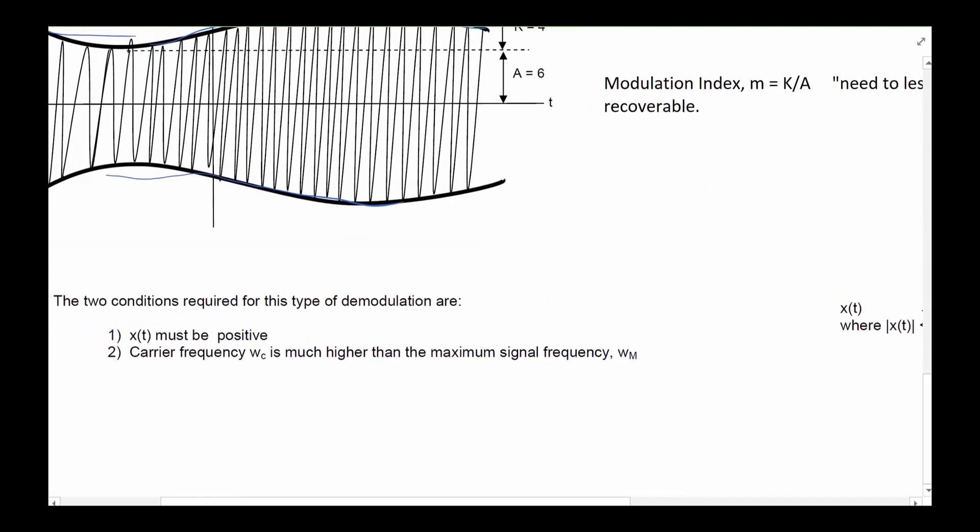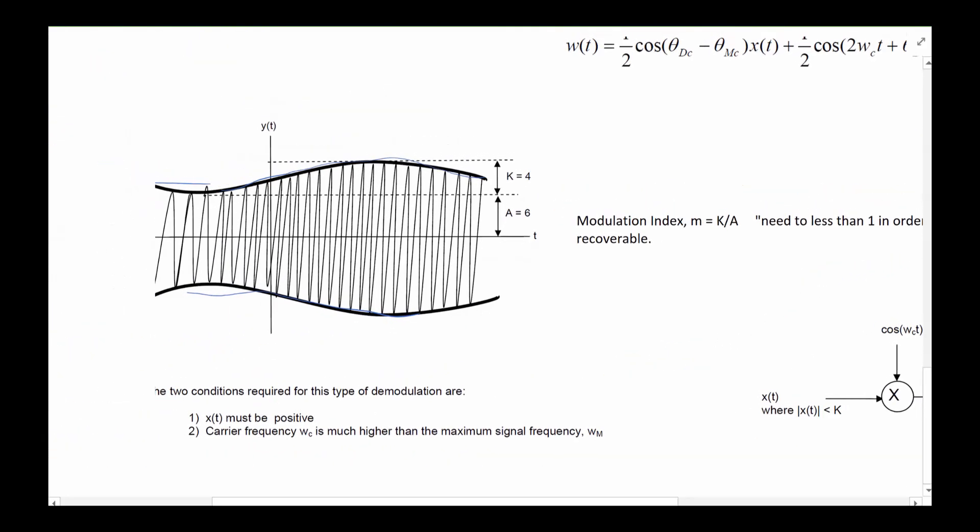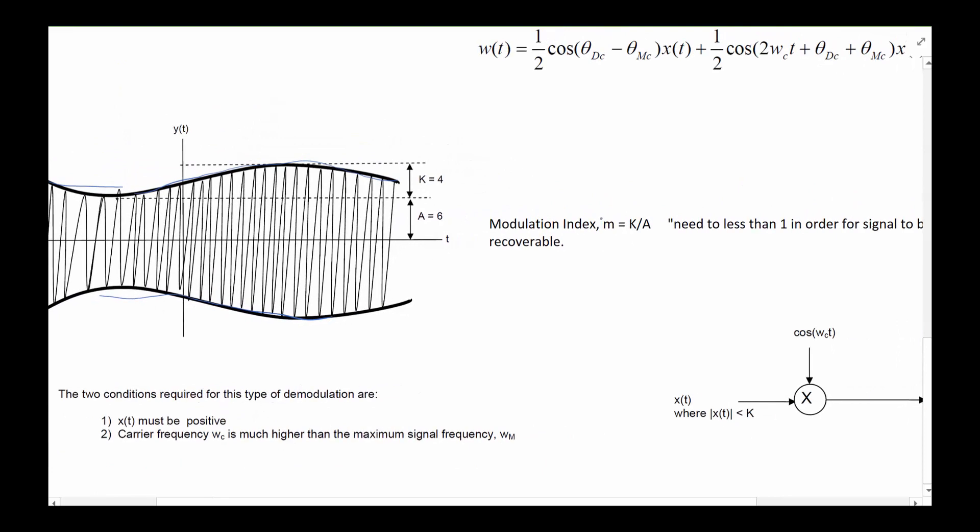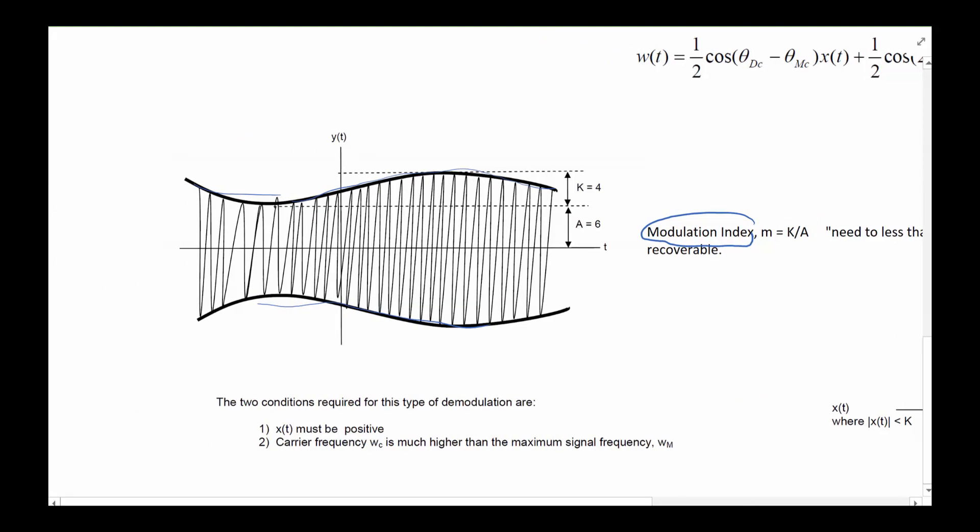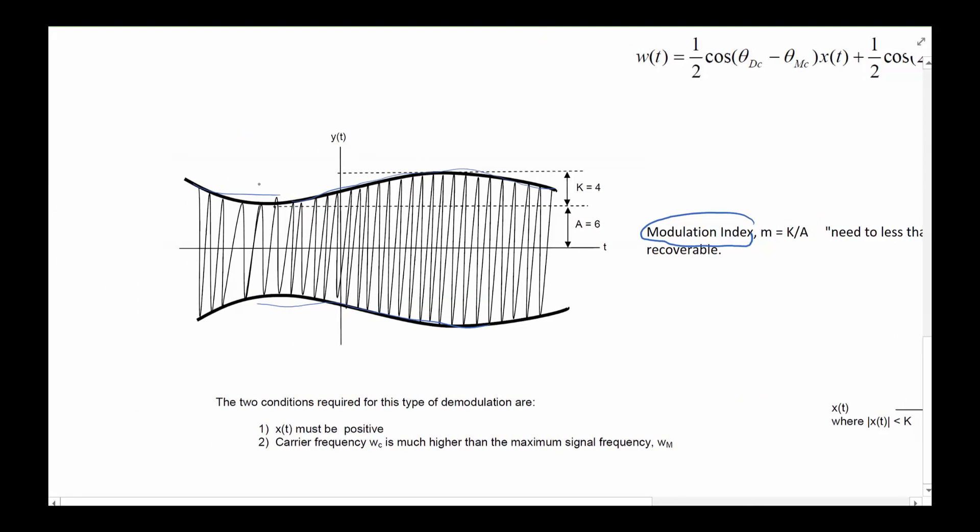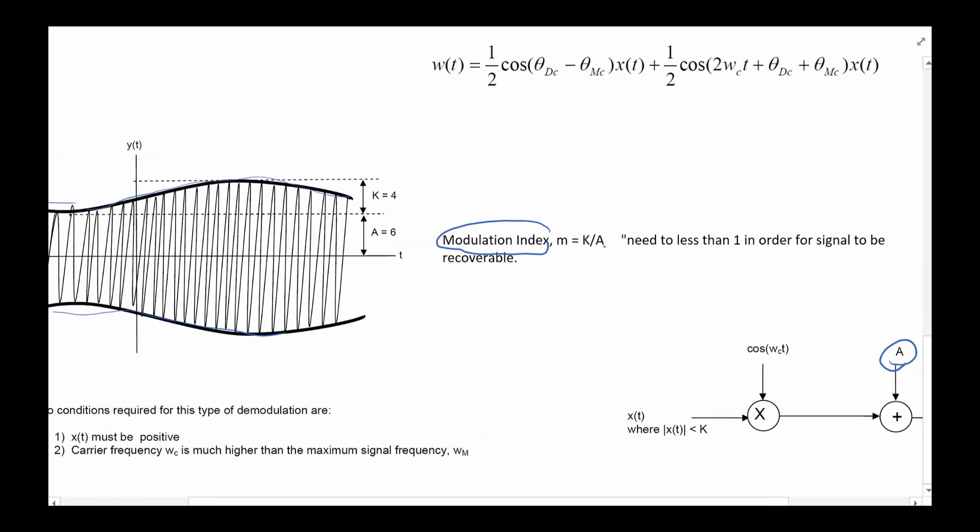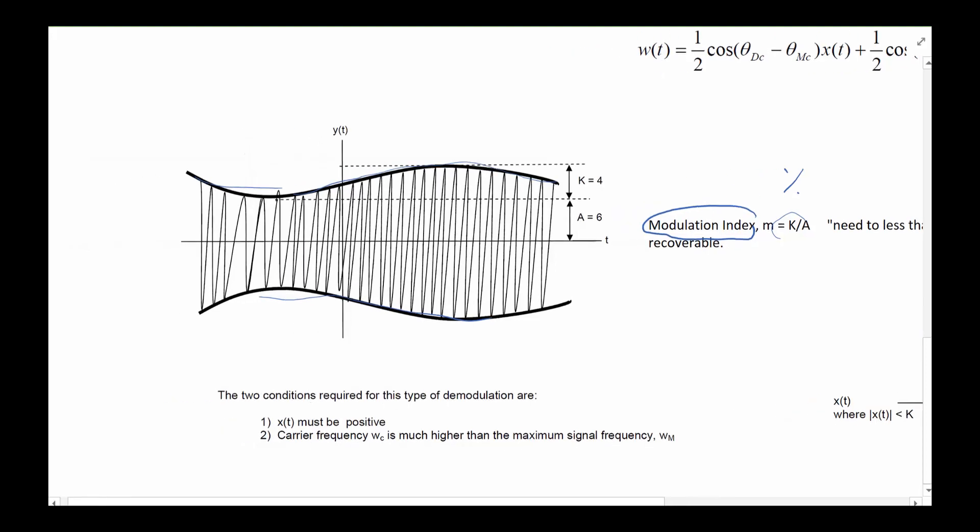We actually have a set of formulas we use just to make sure we remember that. We have this indicator we call the modulation index m, which is simply k over a. Let's take a look at what k is. k is basically your x(t) peak to peak, so what's the highest value it takes out, what's the lowest value it takes on. And a basically is the distance from the lowest value to the center, to zero. So if you do that in time domain then the ratio is called modulation index, and typically this is represented as a percent.